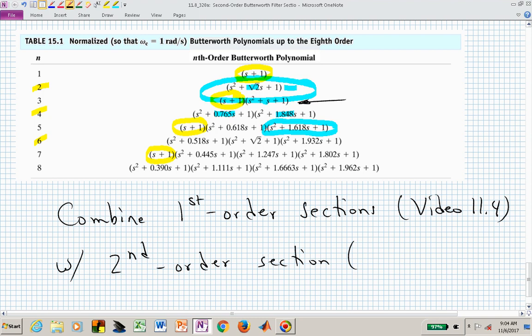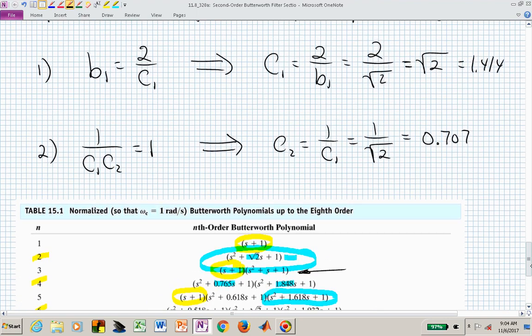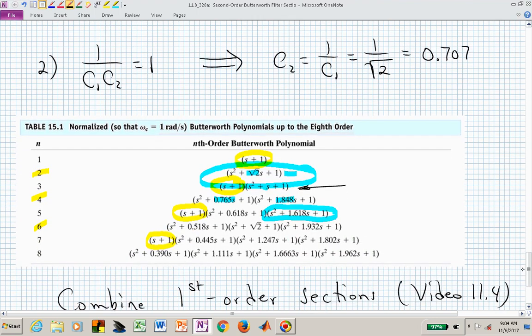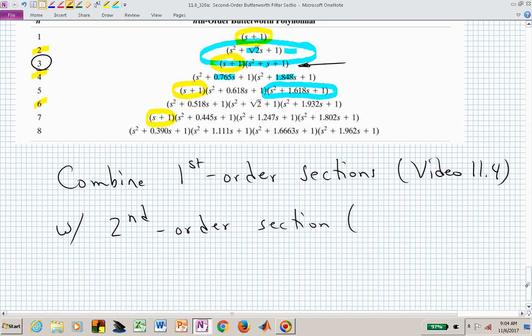S squared plus S plus 1, except now we would need to set C1 equal to something a little different. Now B1 is 1, so now if B1 is 1, then C1 is 2, and C sub 2 is the reciprocal of that, or 1 half, and that's what we would need if we were designing a third-order filter, and we would need from video 11.4 the op-amp configuration for a first-order factor, and there the C is 1, and the R's are 1.